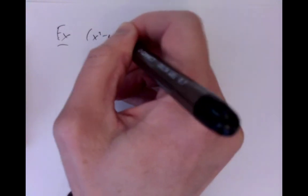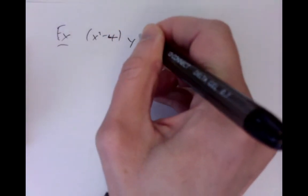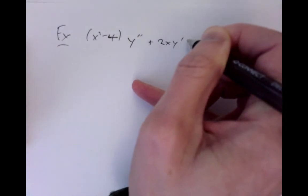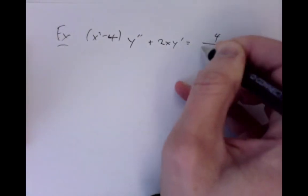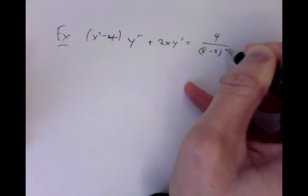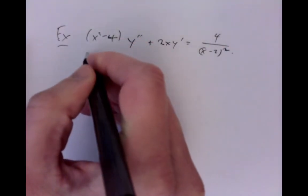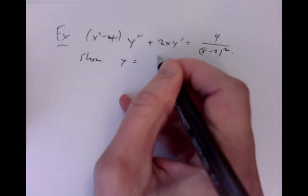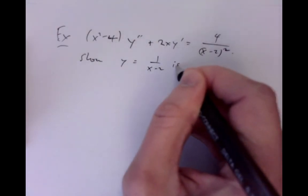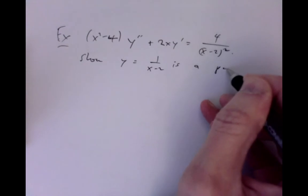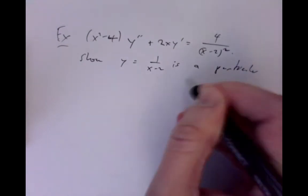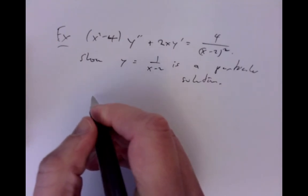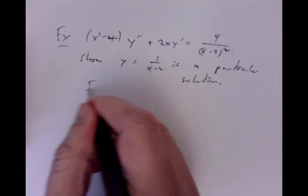So let's consider a similar example: x squared minus 4 times y double prime plus 2x times y prime equals 4 over (x minus 2) all squared. That's our differential equation. The question is to show that y equals 1 over (x minus 2) is a particular solution, and then use that to find the general solution.